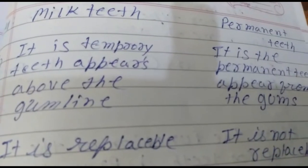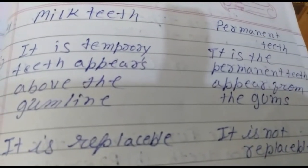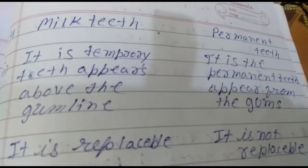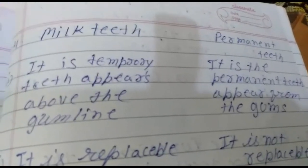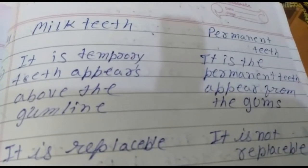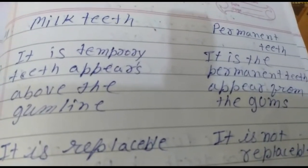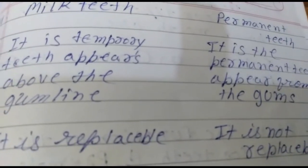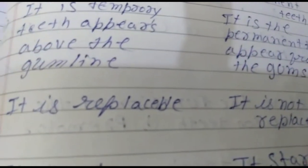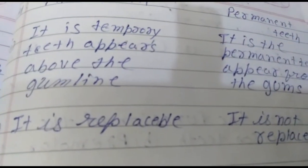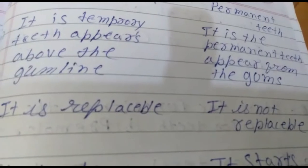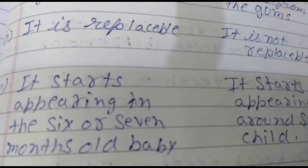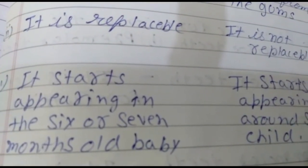Next question: state two differences between milk teeth and permanent teeth. Milk teeth are temporary teeth that appear above the gum line, whereas permanent teeth appear from deeper in the gum. Milk teeth are replaceable; permanent teeth are not replaceable. Milk teeth start appearing when a baby is six or seven months old.